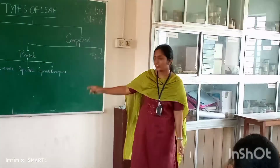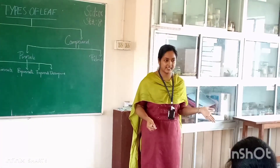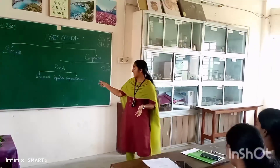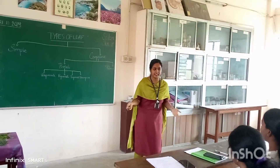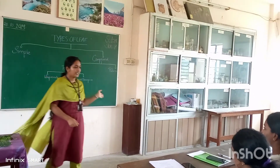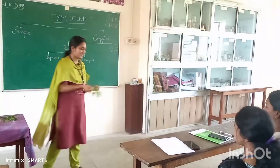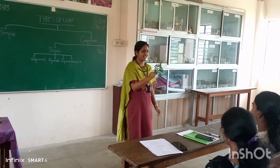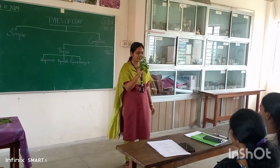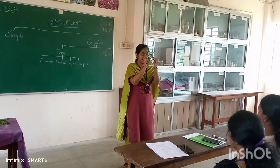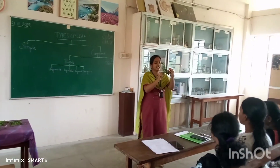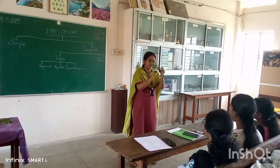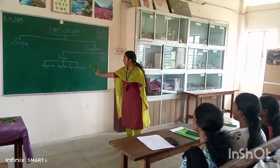The next type is tripinnate. Tripinnate means there is a tertiary axis bearing leaflets that are produced from the secondary axis. From the secondary axis, a tertiary axis containing the leaflets is arranged. An example is Moringa — here you can see a secondary axis, and from the secondary axis a tertiary axis arises, on which the leaflets arise. So it is an example of tripinnate.